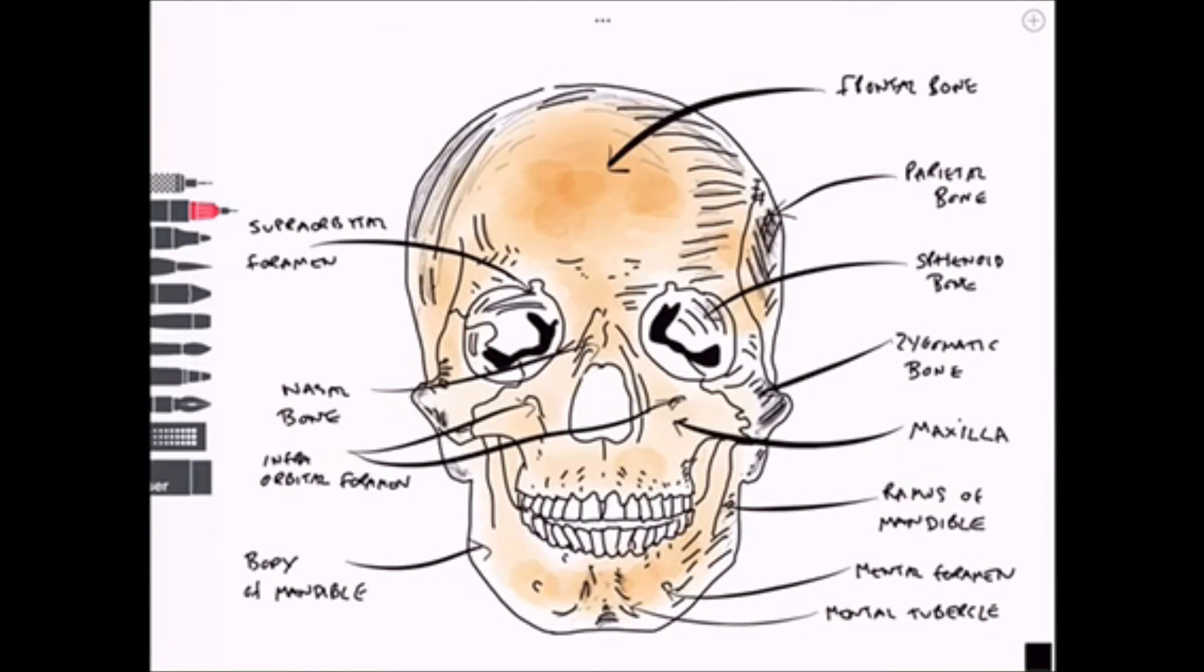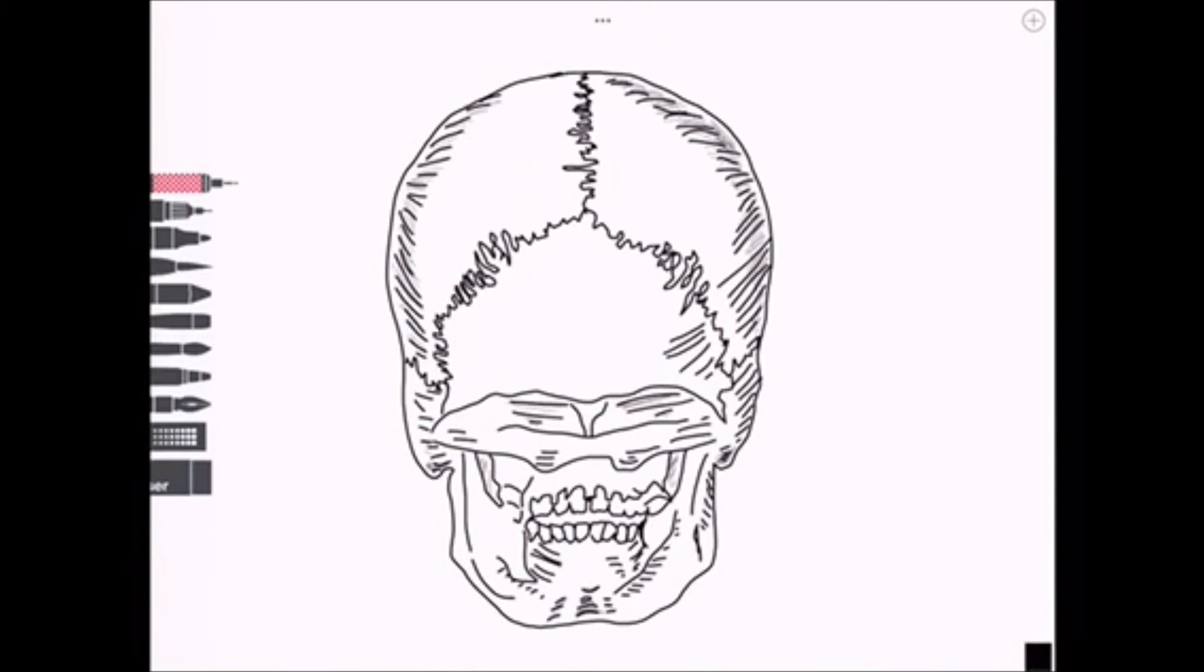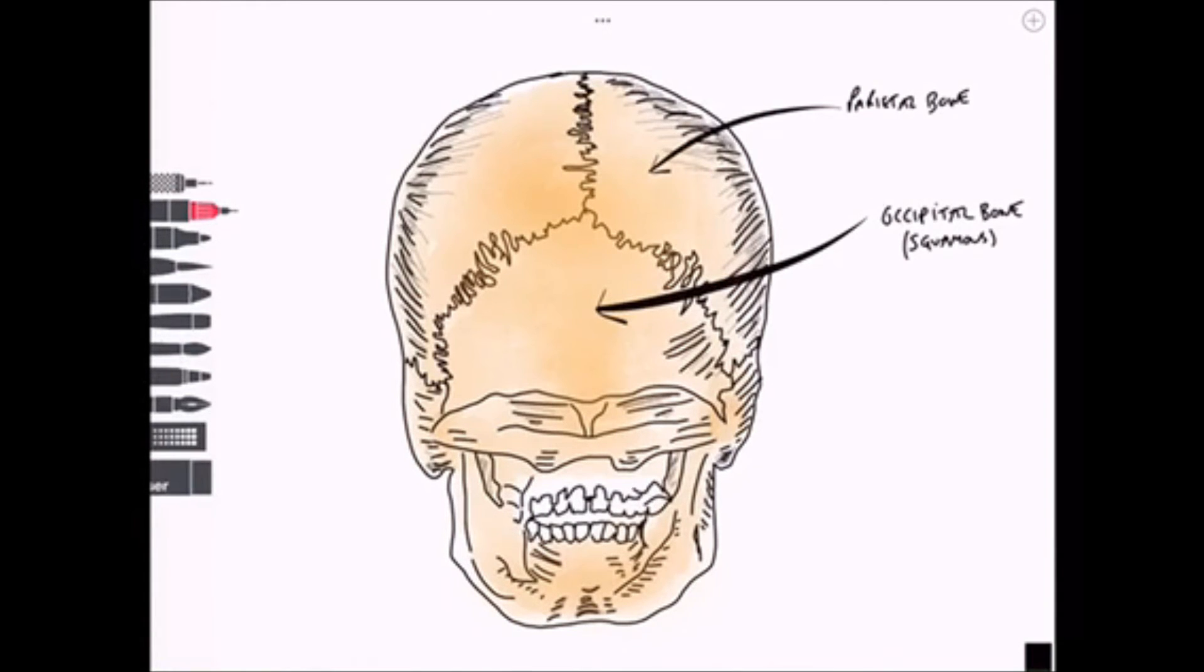That completes our anterior view. We can now look at a posterior view of the skull. Here we can see the parietal bone on each side. We can see the occipital bone posteriorly which makes up the majority of this view.